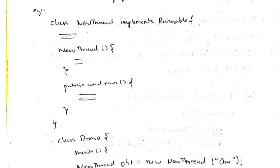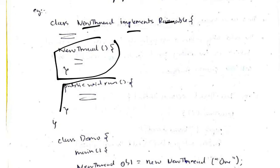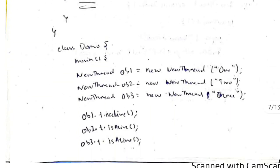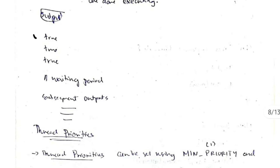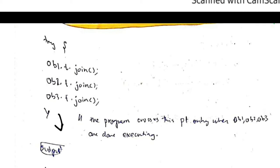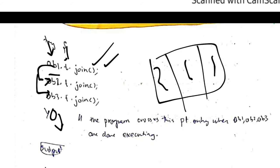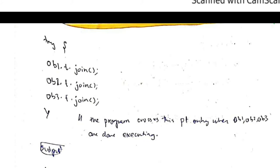In an example using 'class NewThread implements Runnable', the constructor is defined with a public void run method. In the main function, three objects ob1, ob2, and ob3 are created with names one, two, and three. Calling ob1.t.isAlive returns true because the threads have been created and are running. After execution, it returns false. Calling ob1.t.join causes the program to wait until ob1 finishes, then ob2, then ob3 — or if they run simultaneously, all run at the same time and the program continues only after all three complete.